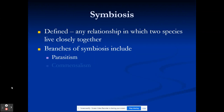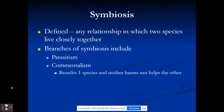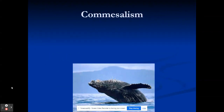So parasitism was the first type of symbiotic relationship we talked about — one you've likely heard about growing up. Symbiosis is a relationship in which two species live closely together. We have parasitism, which we've talked about; commensalism, where one species benefits and the other is not affected; and mutualism, where both species benefit.